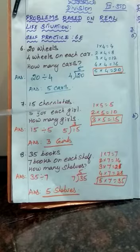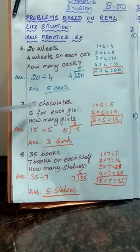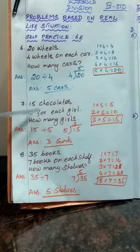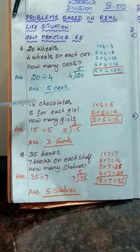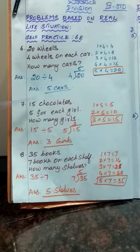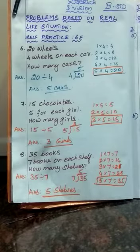See the next one. 15 chocolates, 5 for each girl. How many girls? What do you understand? Totally how many chocolates? 15 chocolates are there. You have to find the number of girls. For each girl they distribute 5 chocolates. So 1 girl gets 5 chocolates. How many girls will share the chocolates? Total chocolates divided by number of chocolates for each girl — total chocolate 15 divided by 5.